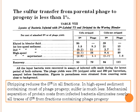Table 8 shows that sulfur transfer from parental phage to progeny is less than 1%. From the table, we know that stripping reduces the S35 in all fractions. After separation, the radioactive tracer was found in the low-speed sediment protein shells. In the high-speed sediment, which contains most of the phage progeny, sulfur is much less. Mechanical separation of protein coats from infected bacteria eliminates nearly all traces of S35 from fractions containing phage progeny.